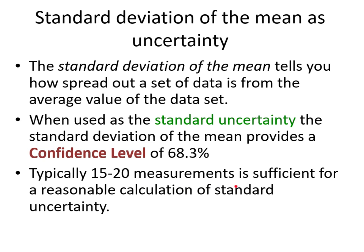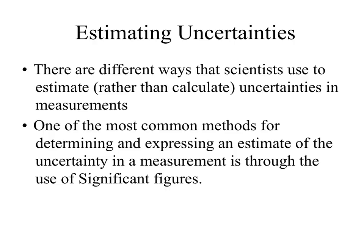Typically, 15 to 20 measurements is sufficient for a reasonable calculation of the standard uncertainty. If you measure something 15 to 20 times, take an average, and calculate the standard deviation of the mean, you can report your result as a value plus or minus its uncertainty and meet that 68% confidence level criterion.